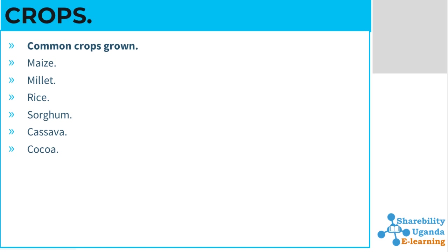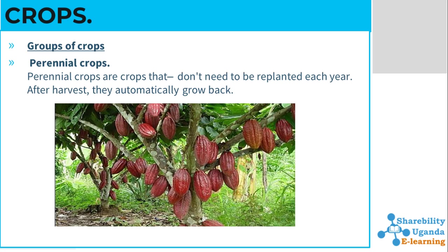The main groups of crops are perennial crops and annual crops. Perennial crops are crops that don't need to be replanted each year — after harvest they automatically grow back. For example, cocoa is a crop that does not need to be replanted. You plant it once and after it has grown it continues bearing fruits throughout the year until the plant grows old and you may need to replace it.